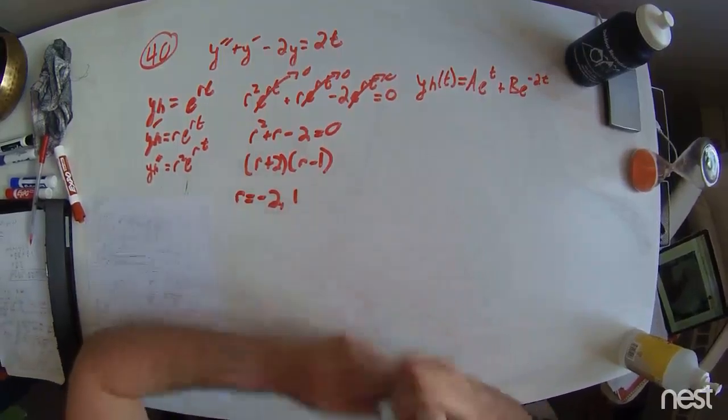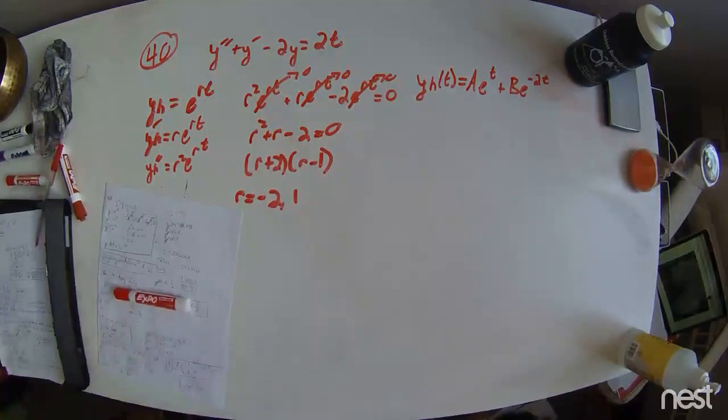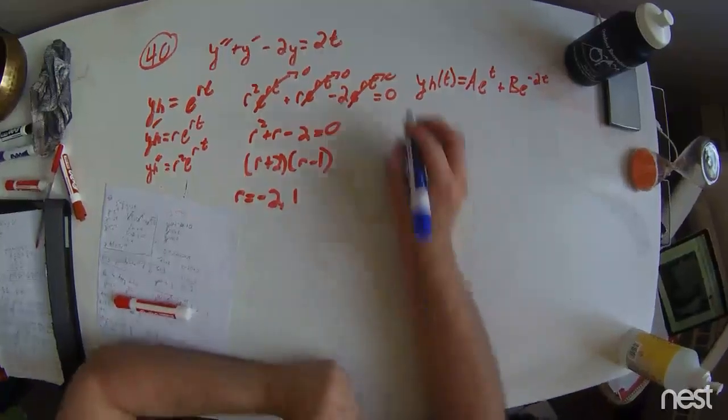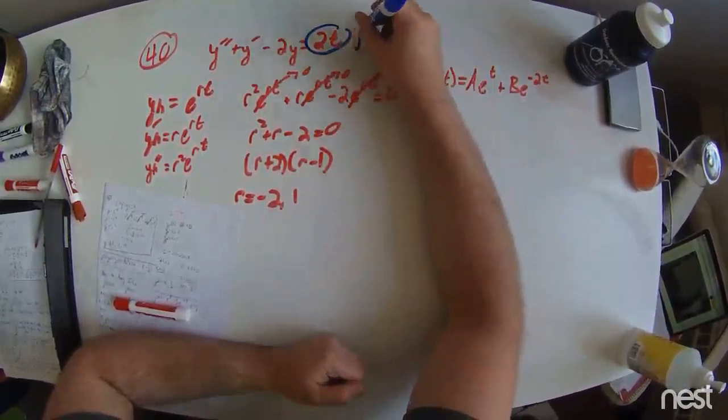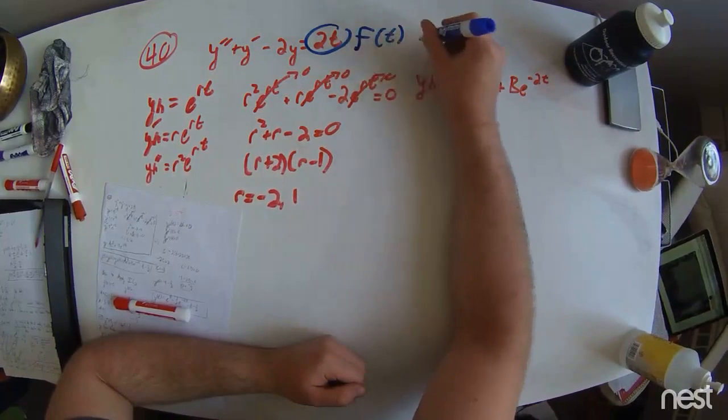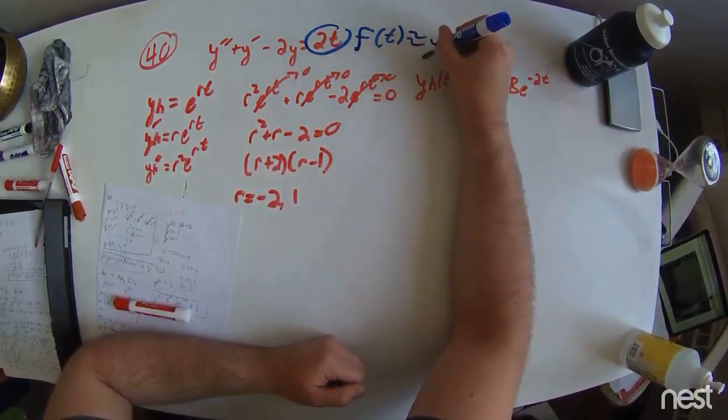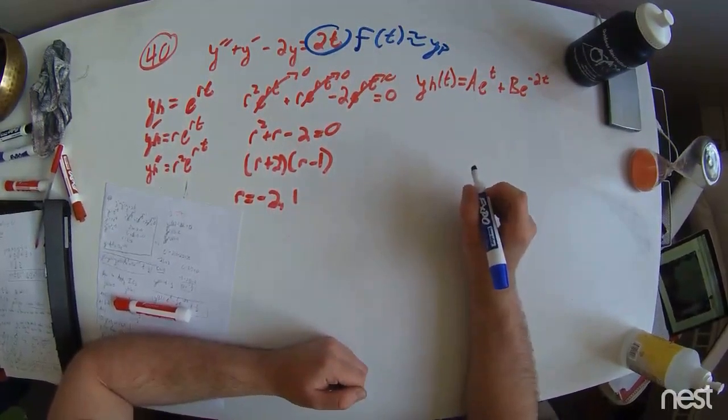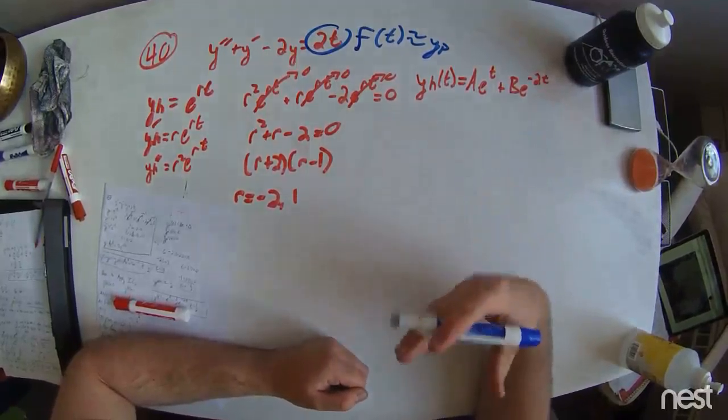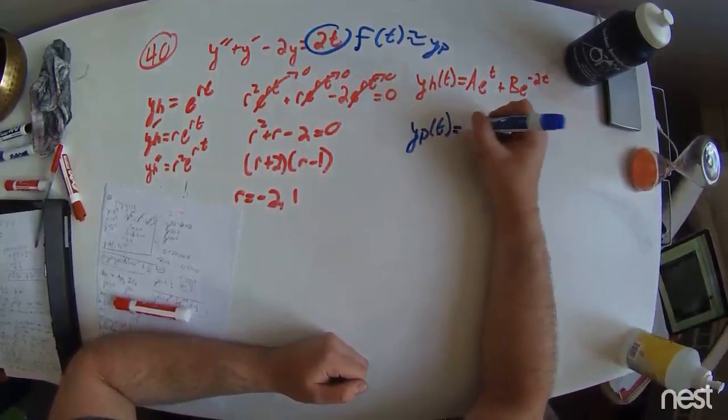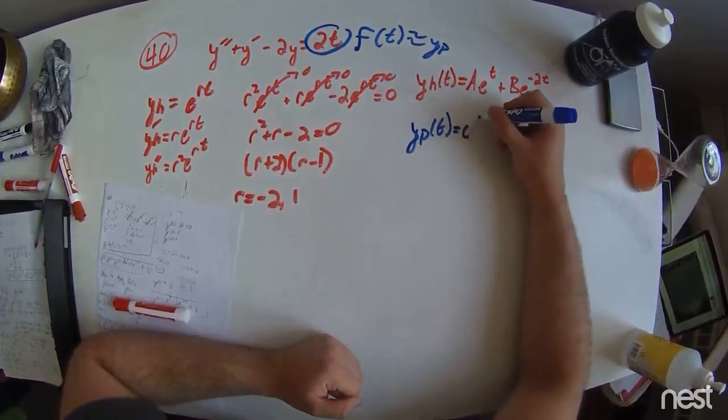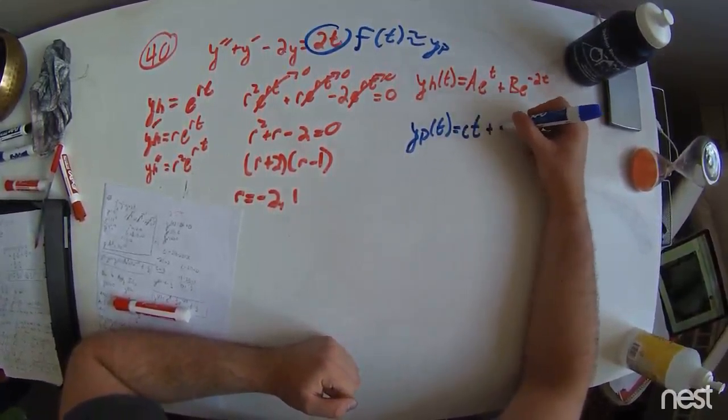That's half of it, y particular. Y particular can be assumed to be of the form similar to that of the forcing function here. Now, because this forcing function is a linear function, we assume our guess to be equal to some constant times t plus d.